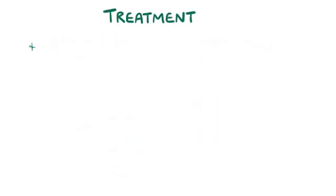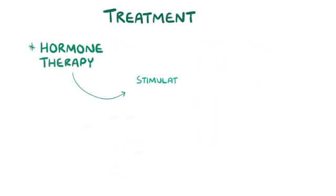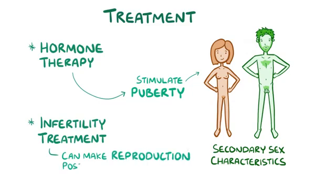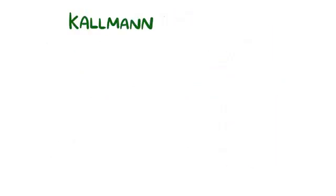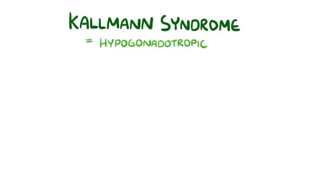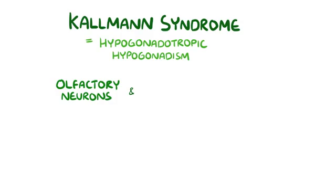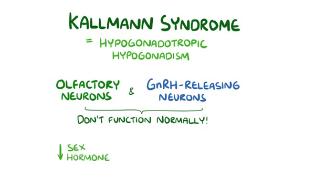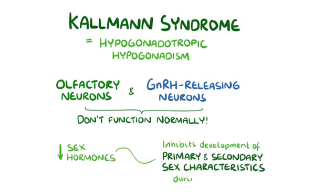Treatment is focused on hormone therapy, which can stimulate puberty and the development of secondary sex characteristics. There's also infertility treatment, which can make reproduction possible in some cases. To recap, Kallmann syndrome is a type of hypogonadotropic hypogonadism where olfactory neurons and gonadotropin-releasing hormone neurons don't function normally. The decrease in sex hormones inhibits the development of primary and secondary sex characteristics during puberty.